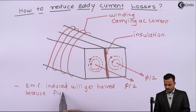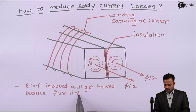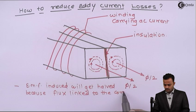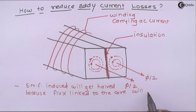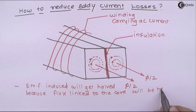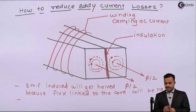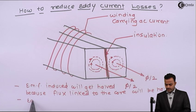Because flux linked to the core will be half, since EMF induced will get half, hence eddy current produced will also be half. So here we're able to get half of the eddy currents, so that eddy current got reduced.